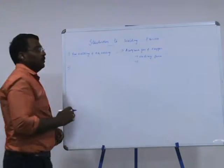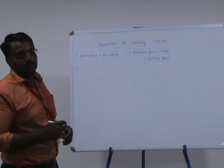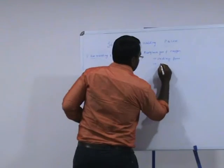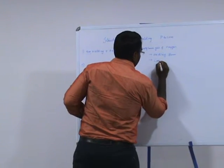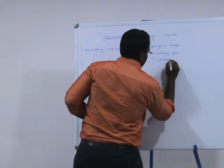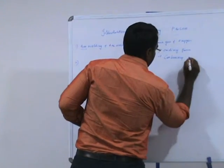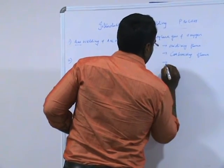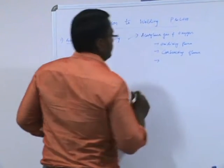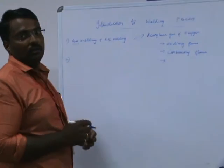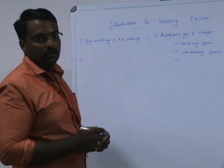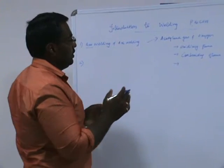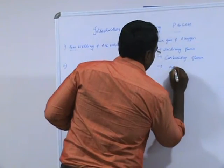If you are giving more acetylene gas and less oxygen, we will be calling it a carburizing flame. And if you are giving an equal amount of acetylene and an equal amount of oxygen, we will be calling it a neutral flame.